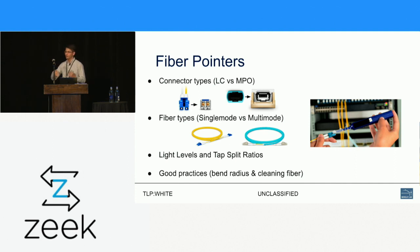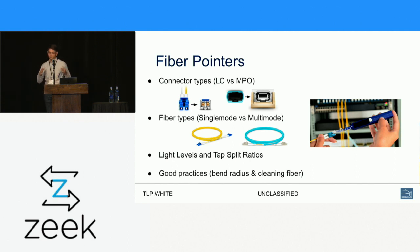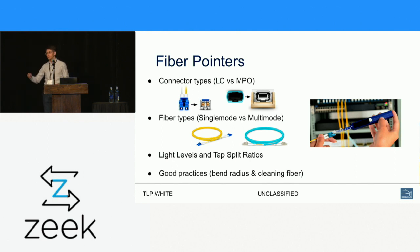You're losing light at every connector point along a path — at each of five patch panels, over a kilometer span. If you're right at the receiver's signal strength threshold and you go to install a tap, taps split light off to provide a copy to Zeek. They're sold as 50-50, 70-30, or 80-20 split ratios. If you're right at that threshold, installing a tap can drop you below it and your production link won't come up.